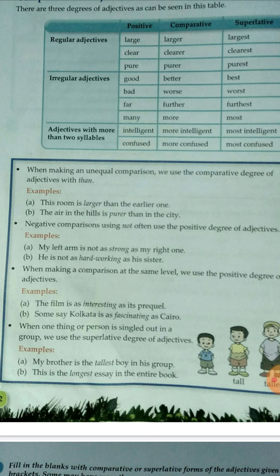The third rule is: when making a comparison at the same level, we use the positive degree of the adjective. For example: 'The film is as interesting as its sequel' — both parts are equally interesting. Another example: 'Some say Kolkata is as fascinating as Cairo.' This is an equal comparison, so the positive degree is used.